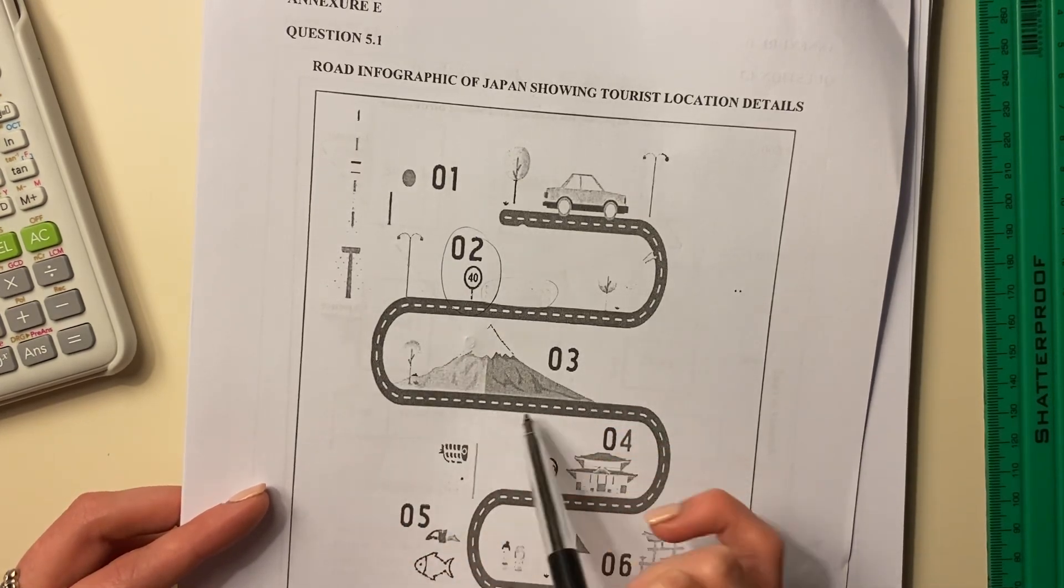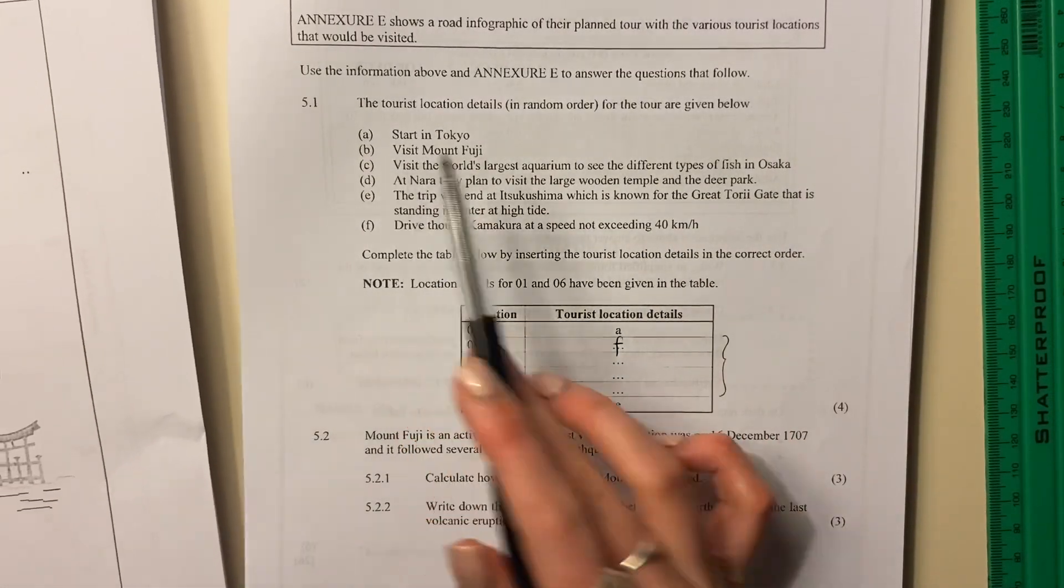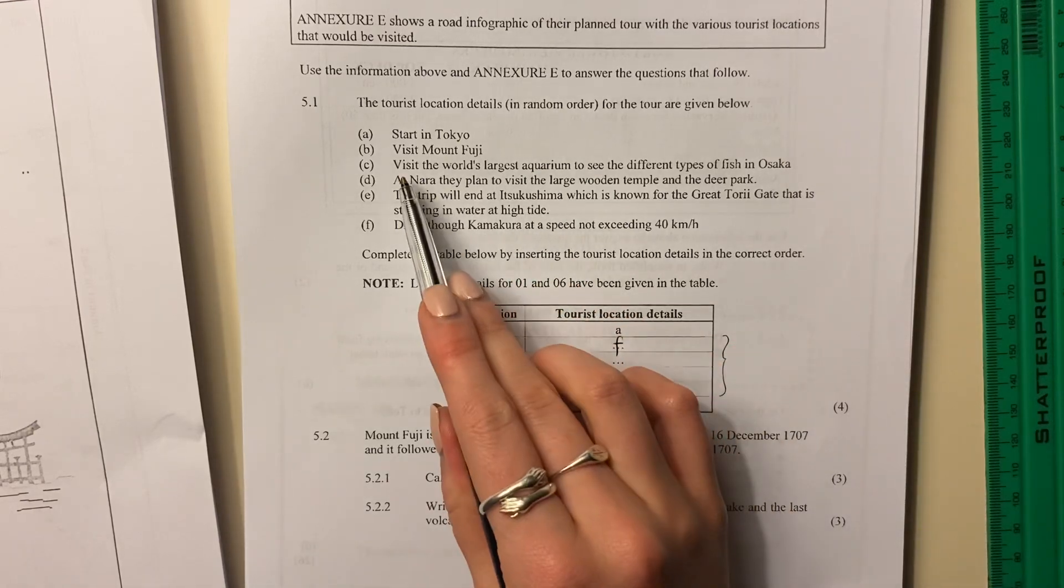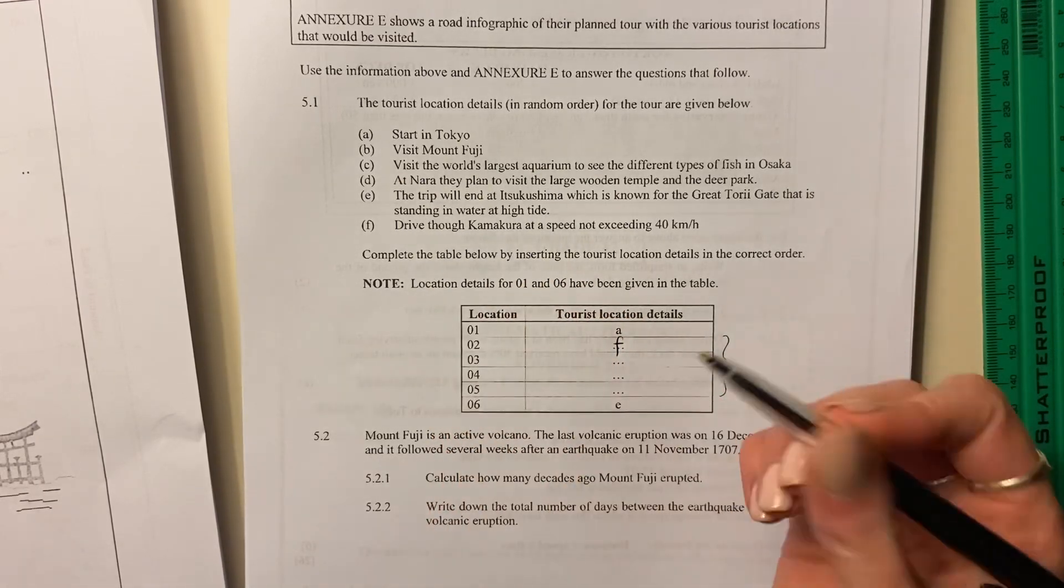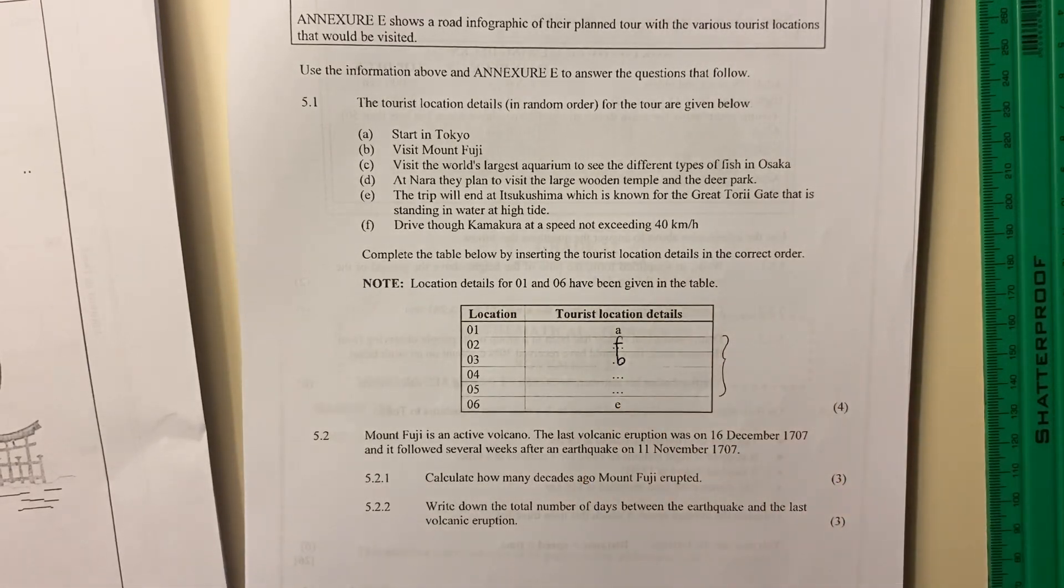Then they go here. This is a mountain. So we're thinking that it has something to do with the mountain. Let's go down. It says visit Mount Fujiyama. Okay, the others say the largest aquarium. Nope, that doesn't make sense, right? So this one is Mount Fujiyama. So we literally are just outlining what we see.